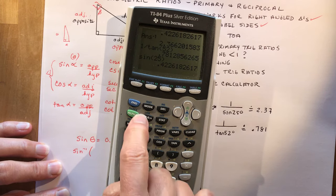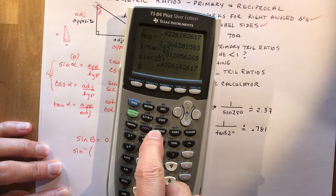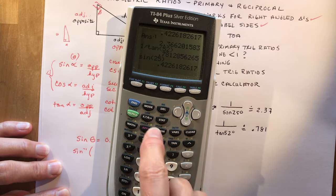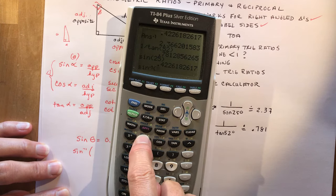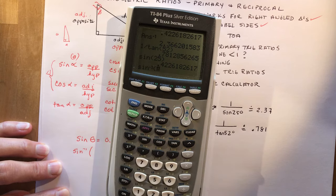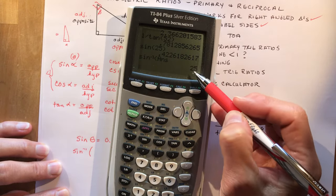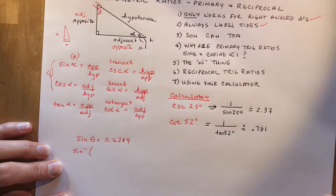So when you take the sine of 25 degrees, it's giving you a ratio. But if you do second sine, oops, I hit the wrong button, if I do second sine of the answer, it takes me back to the degrees. So one gives you the ratio, going backwards gives you the degrees.